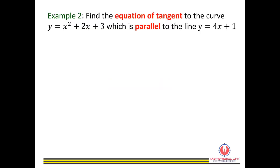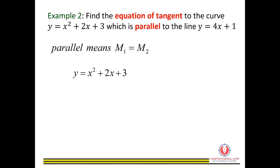Example 2: find the equation of tangent to the curve y equals x squared plus 2x plus 3, which is parallel to the line y equals 4x plus 1. We have the curve y equals x squared plus 2x plus 3. Differentiate this, you will get 2x plus 2. This is m1.